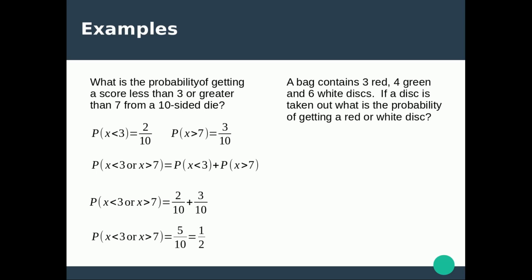For our second example, we have a bag containing 3 red, 4 green, and 6 white discs. We want the probability of getting a red or a white disc. This is mutually exclusive because you can't have a disc that's both red and white.